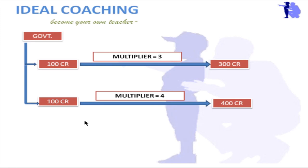Let us understand with this example. Suppose your father gets a salary of 100 rupees from the government and gives 10 rupees to you. You take that 10 rupees as your own income, so the total income in the economy is now 110 rupees. When you take those 10 rupees to a shopkeeper and buy an ice cream, the shopkeeper earns 10 rupees. Now it is 100 plus 10 plus 10, which is 120 rupees. The income is being multiplied — the same amount given as salary is now a source of income for both you and the shopkeeper.